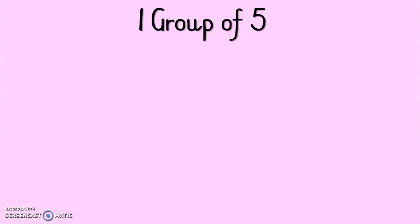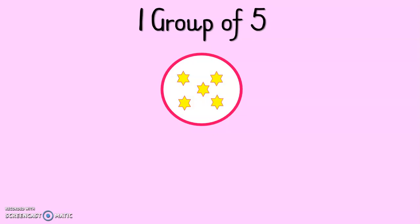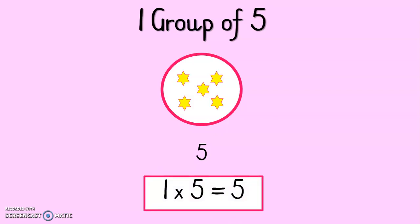Now let's look at how we would do the sums for our 5 times tables. It says 1 group of 5. That means I have to draw 1 group. There's my 1 group — I've got 1 circle. But now it says 1 group of 5, so how many stars can I put inside my circle? Yes, 5. Let's count: 1, 2, 3, 4, 5. So it's 1 group of 5 circles. How many stars are in my circle? 5.